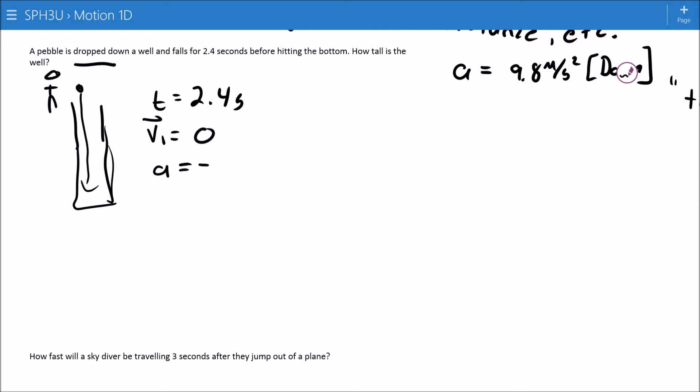So what we're going to assume here is that the initial velocity is zero, and again, it's falling into the well. We're assuming air resistance and all those kinds of things I was just talking about are ignorable, and that acceleration due to gravity is negative 9.8 meters per second squared. How tall or how deep is the well?